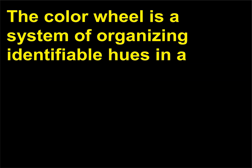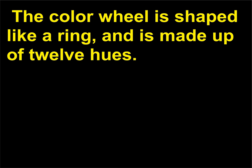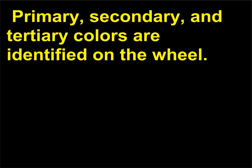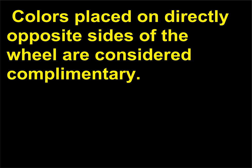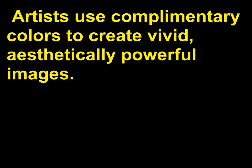What is the color wheel? The color wheel is a system of organizing identifiable hues in a way that helps artists understand the relationship between colors. The color wheel is shaped like a ring and is made up of 12 hues. Primary, secondary, and tertiary colors are identified on the wheel. Colors placed on directly opposite sides of the wheel are considered complementary — according to the color wheel, yellow and violet are complementary colors. Artists use complementary colors to create vivid, aesthetically powerful images.